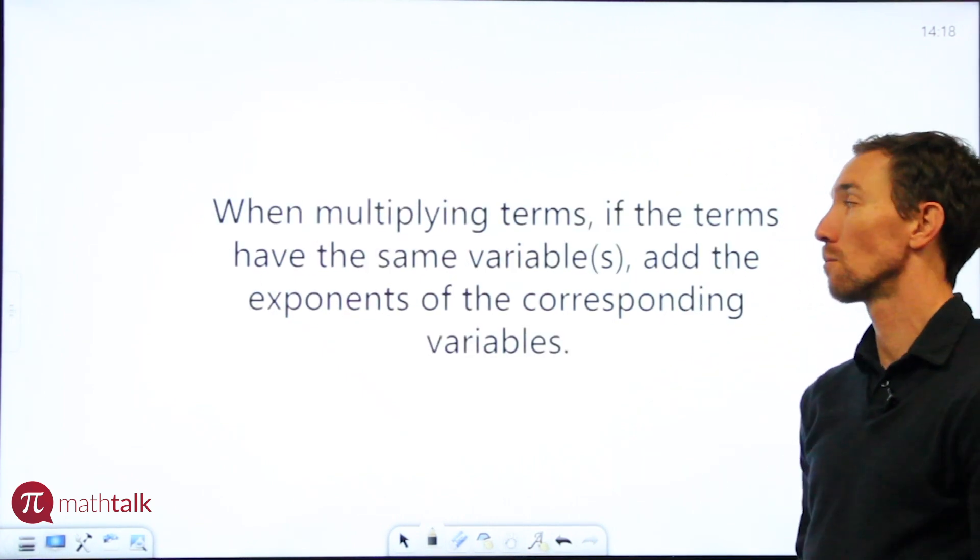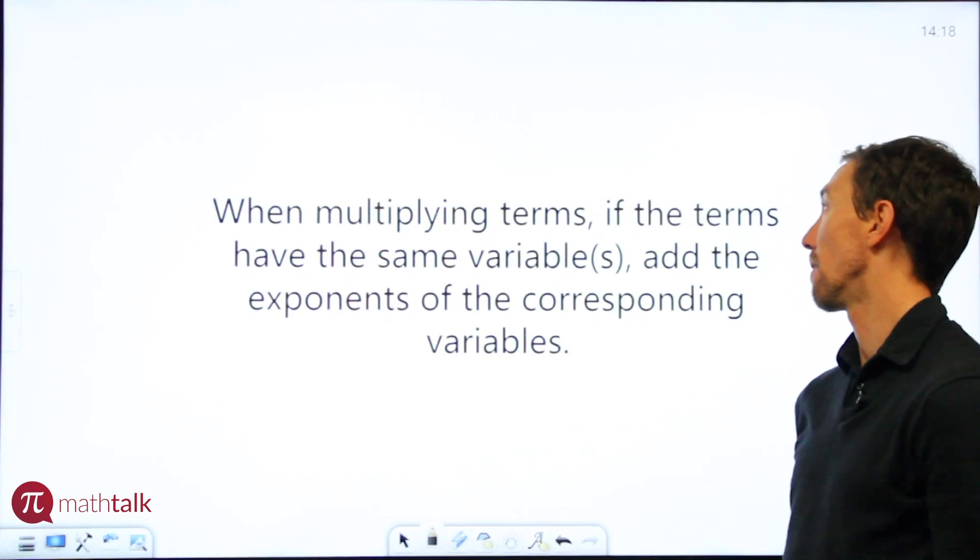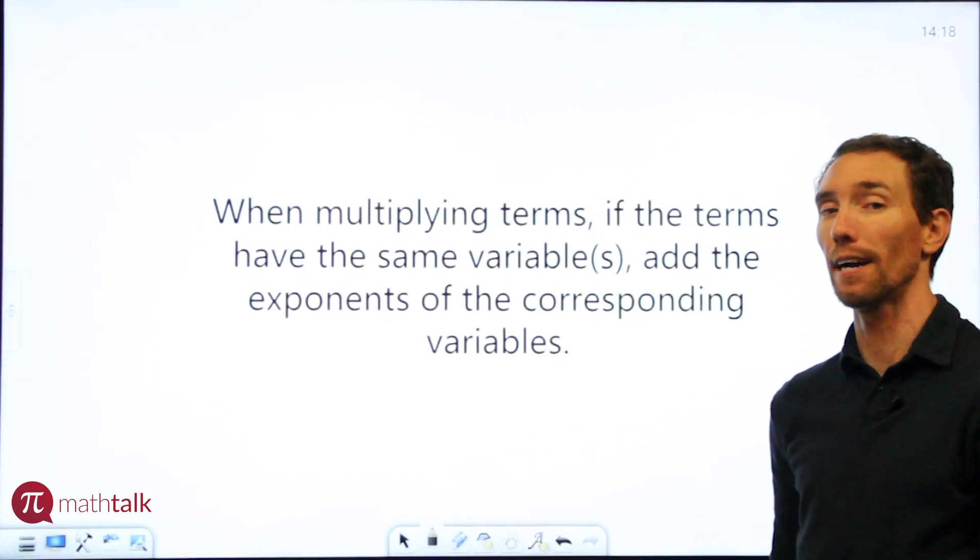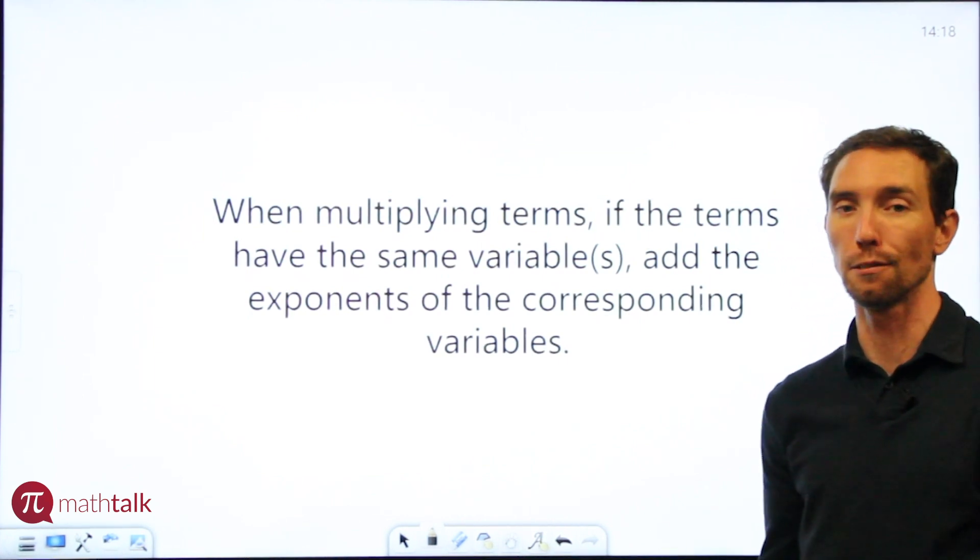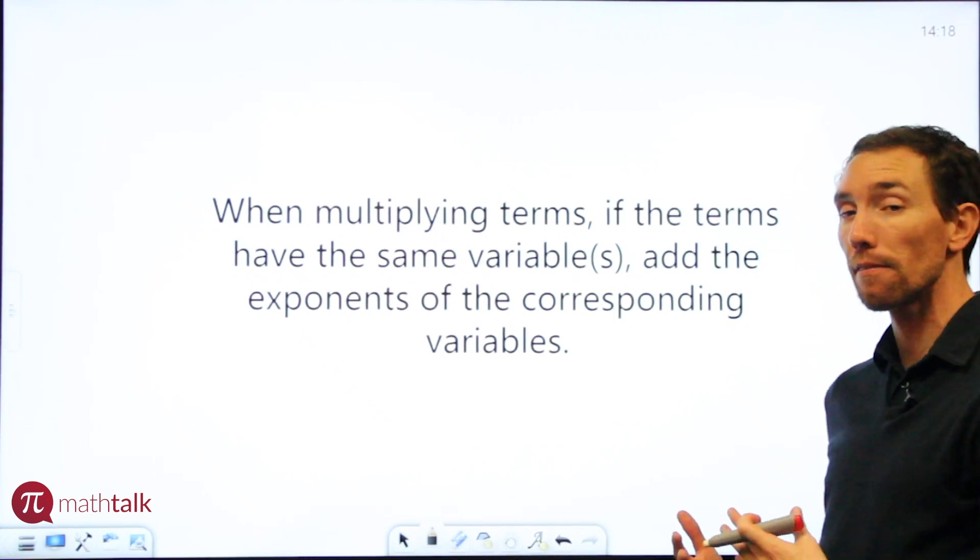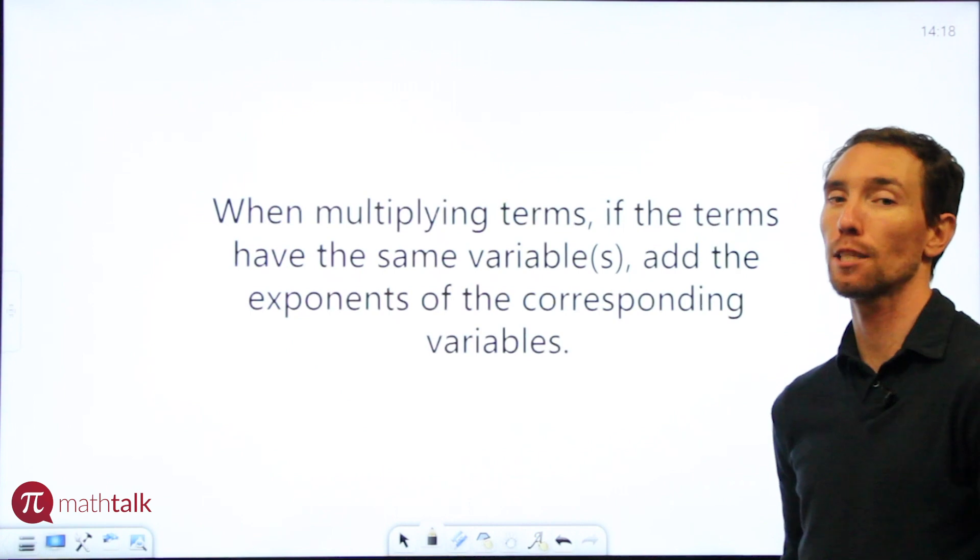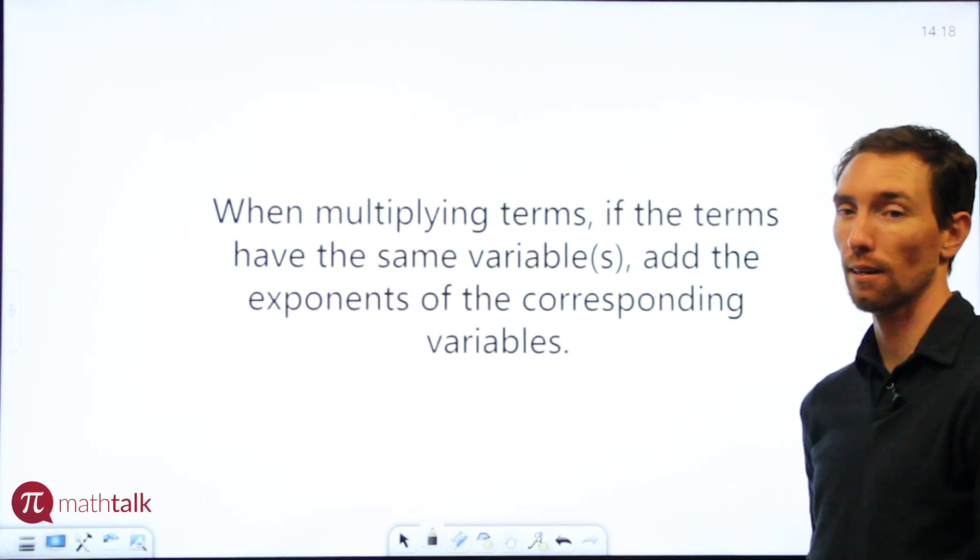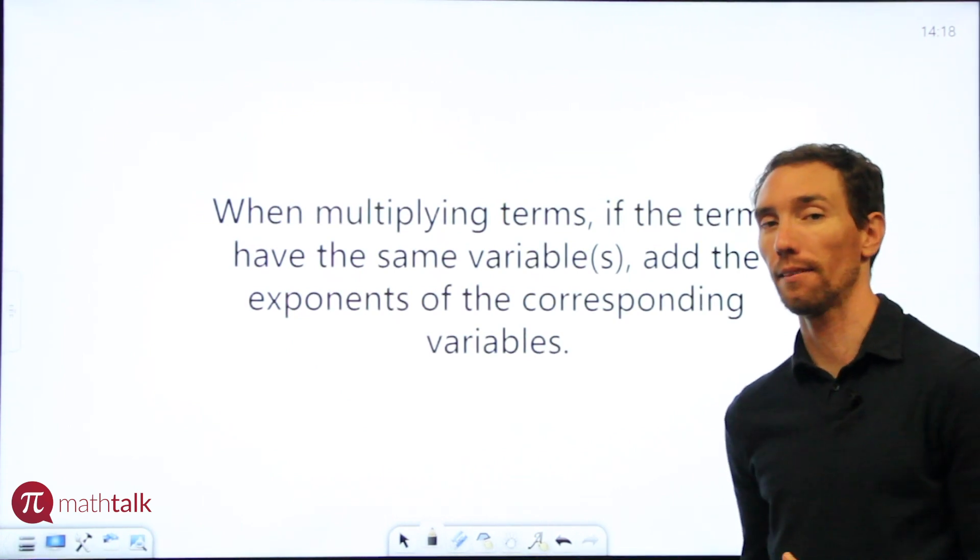When you multiply terms and polynomials, keep in mind that if the terms have the same variable—like they're both X's or both Y's—you want to keep the variable the same but add the exponents together. That's the trick. Let's look at a couple examples.